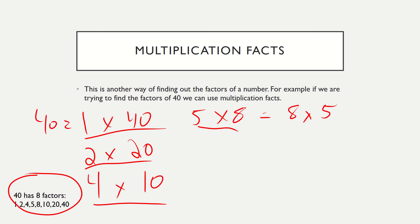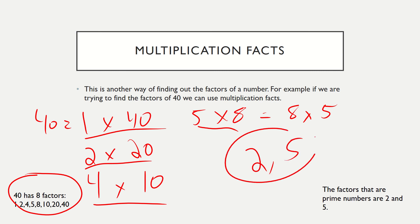Of those eight factors, my prime numbers are two and five. The reason is one times five equals five and nothing else does, and one times two equals two and nothing else does. The other numbers all have additional factors.